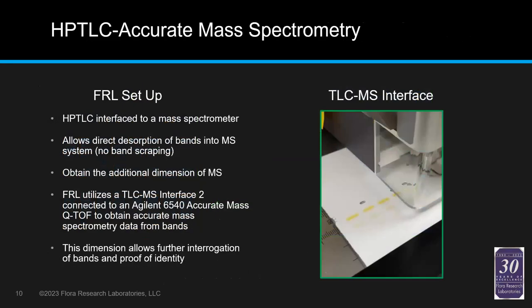Now we'll get into some work coupling HPTLC to accurate mass spectrometry. This technology allows us to desorb bands directly off the plate into a mass spec. We have a TLC-MS interface from CAMAG connected to an Agilent 6540 QTOF, enabling in-situ band interrogation. The old way was to scrape the band with a plate scraper, extract into a centrifuge tube of solvent, spin it down, and filter it. This new approach is much faster.